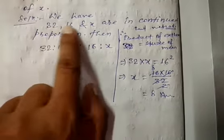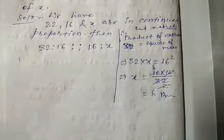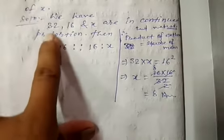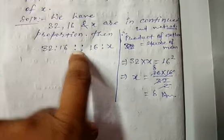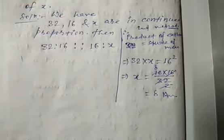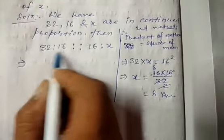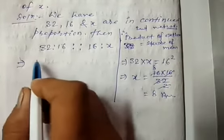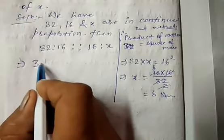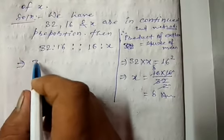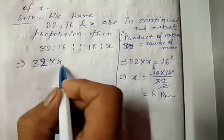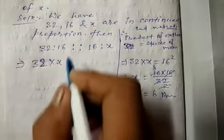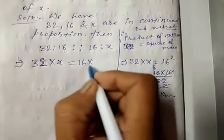From the definition: if three quantities are in continued proportion, then ratio between first and second is equal to ratio between second and third. It can also be written as: product of extremes = product of means. Product of extremes: 32 × x; product of means: 16 × 16. So 32x = 256, giving x = 8.